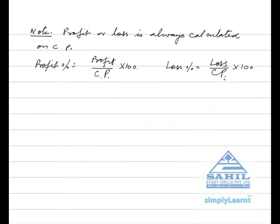Note: Profit or loss is always calculated on CP. Profit percent is equal to total profit divided by cost price into 100. Loss percent is total loss divided by cost price into 100.